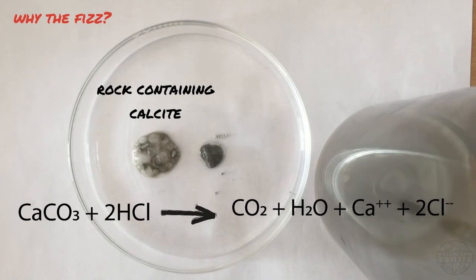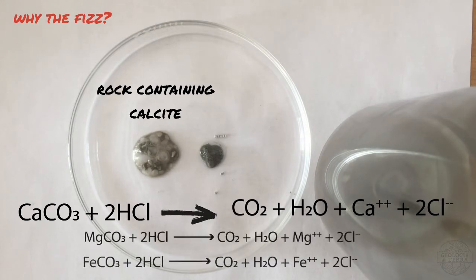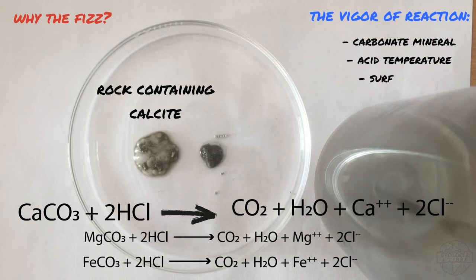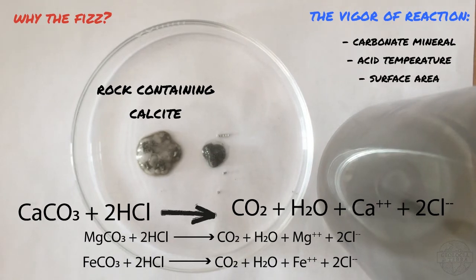Calcite is the most common carbonate mineral that geologists usually encounter, but all rocks that contain carbonate minerals, for instance dolomite, magnesite and siderite, will show similar reactions. The vigor of the reaction will depend on the carbonate mineral, on the temperature of the acid, and on the rock's surface area that is available for the reaction.